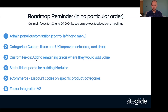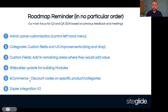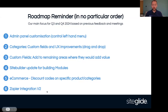SiteBuilder update for building modules — it's only really relevant if you're building modules, but it would mean that process speeds up considerably, so you can use SiteBuilder to go through putting a module together. And then e-commerce — a few e-commerce ones, but the main one would be discount codes on specific products and categories. And finally, the Zapier integration, which wasn't on the list last time but has become more important — there are a few connection issues occasionally with Zapier needing you to reconnect.